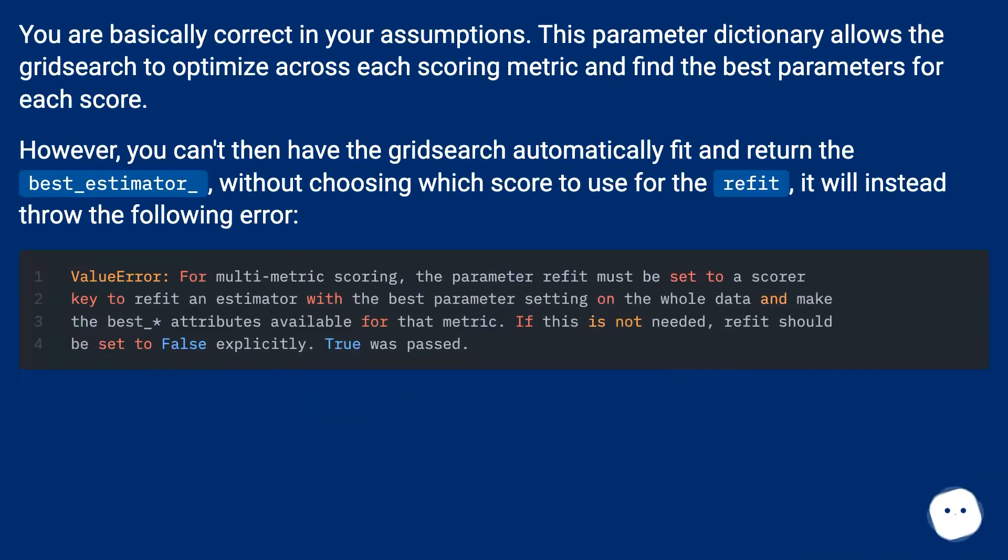You are basically correct in your assumptions. This parameter dictionary allows the GridSearch to optimize across each scoring metric and find the best parameters for each score.